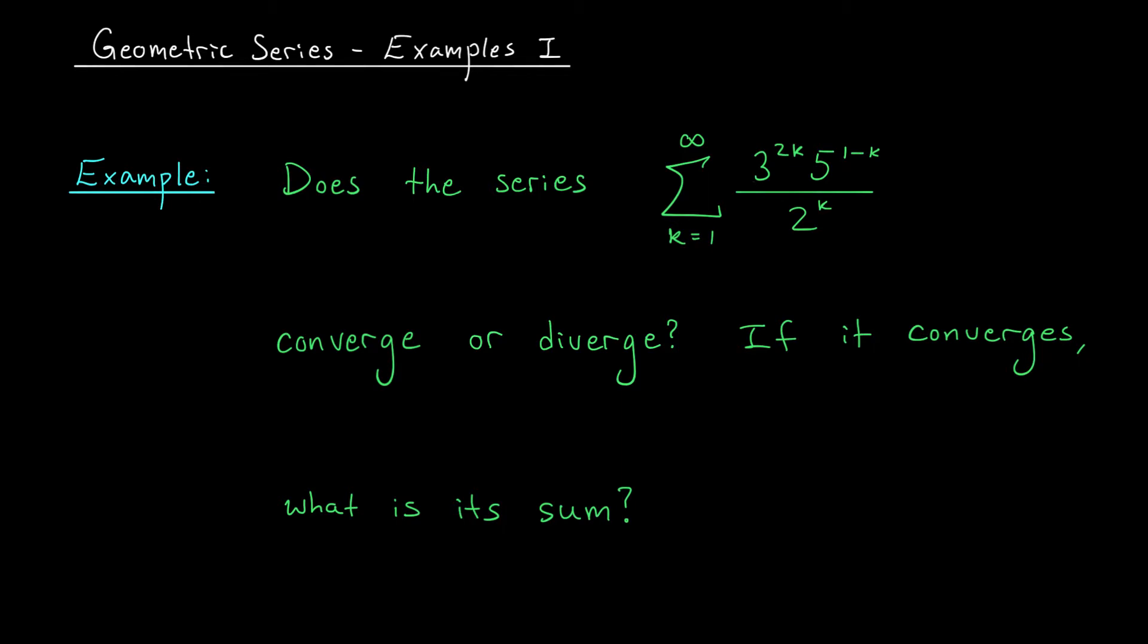The question is, does this series, the sum from k equals 1 to infinity of 3 to the 2k, 5 to the 1 minus k, divided by 2 to the k, does this converge or diverge? If it does converge, can you tell me the sum?